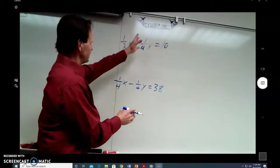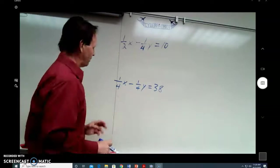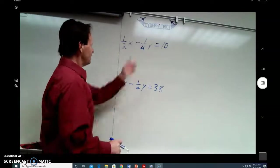I've got negative 1 fourth y here, and negative 1 fourth y there. That is the key. We need to get two of these variables to be the same or equal and opposite, which we get to in a different problem. In this case, they're the same.